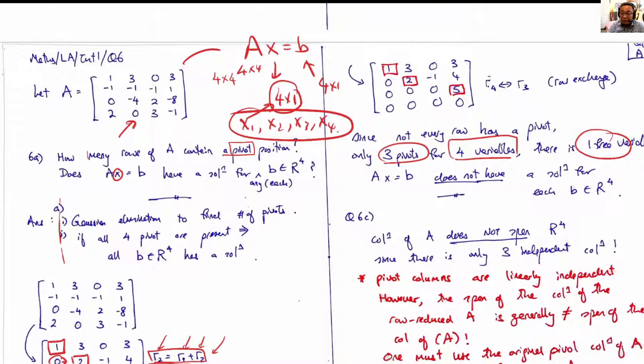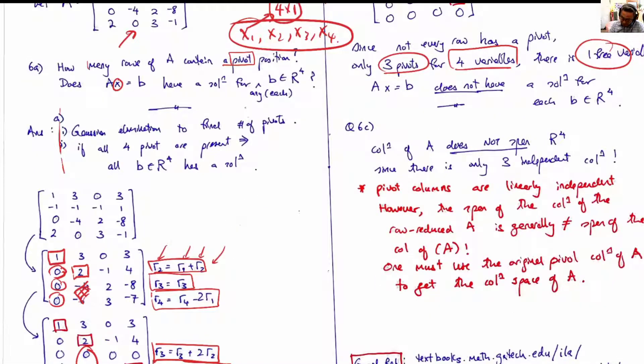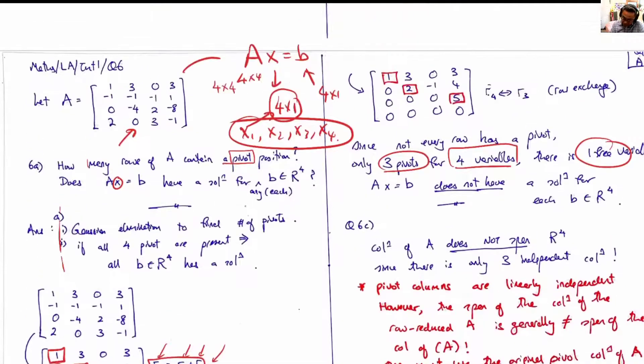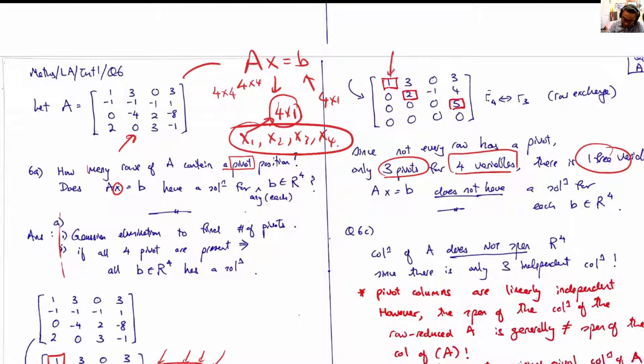Now, if you are going to ask which columns of A are linearly independent, actually the pivot positions tell you: column 1, column 2, and column 4 of the original matrix A are independent. Column 3 can be constructed by some linear combinations of columns 1, 2, and 4. You have to find the weights.